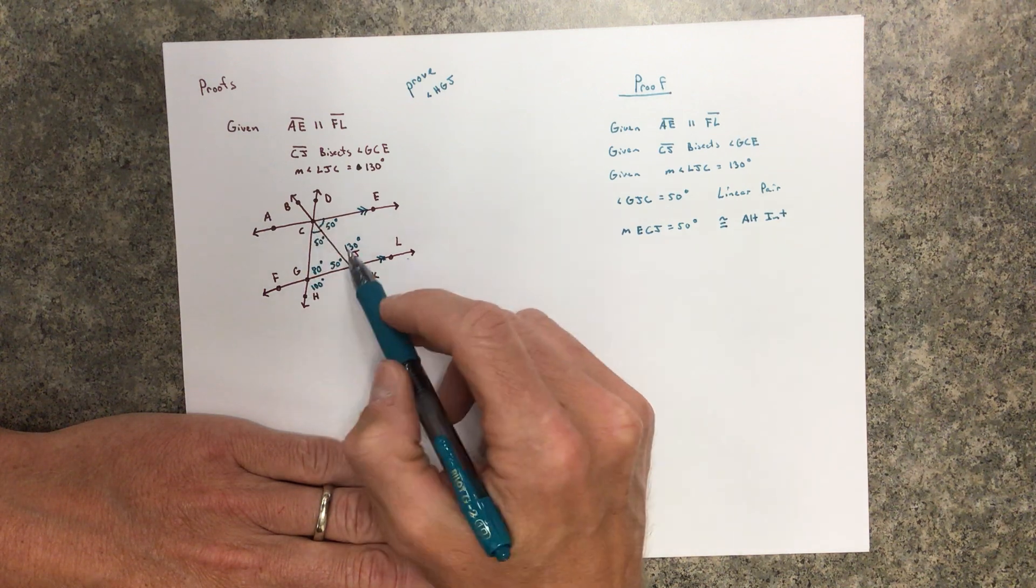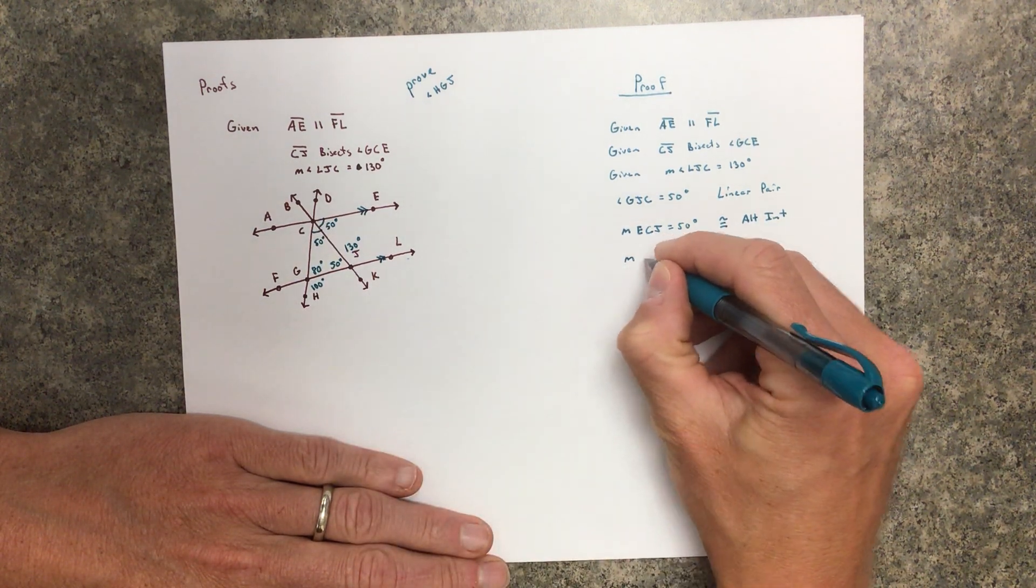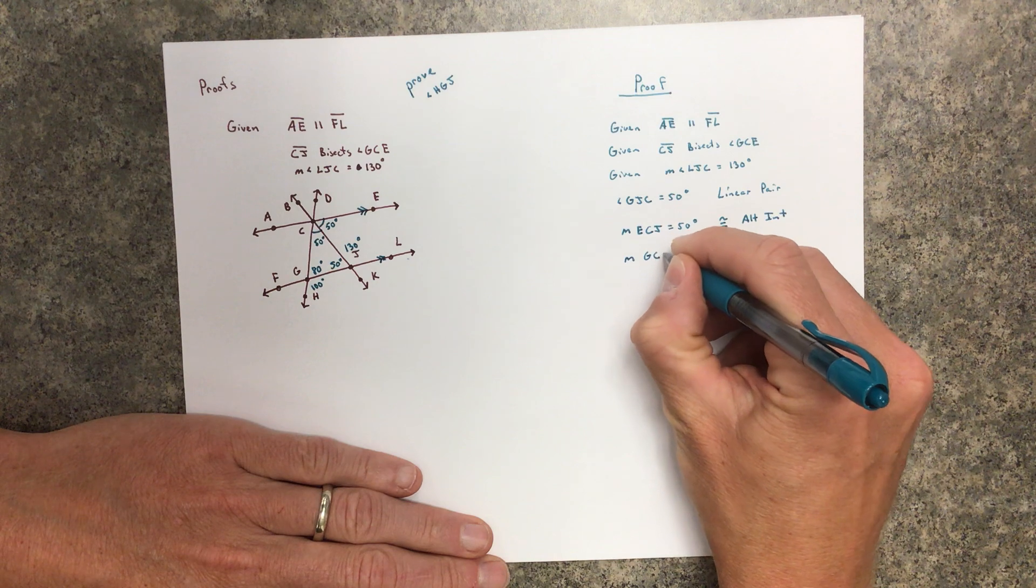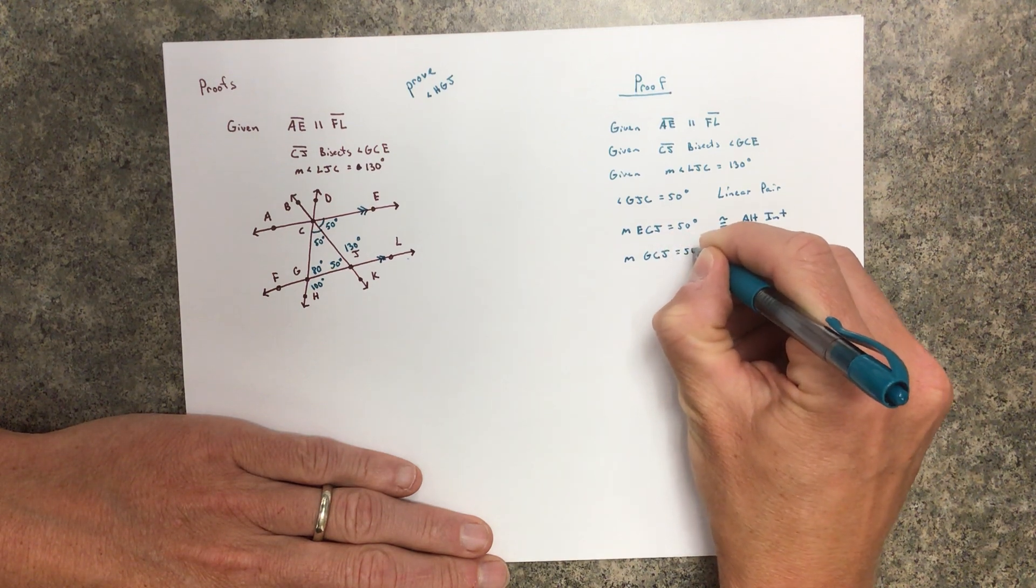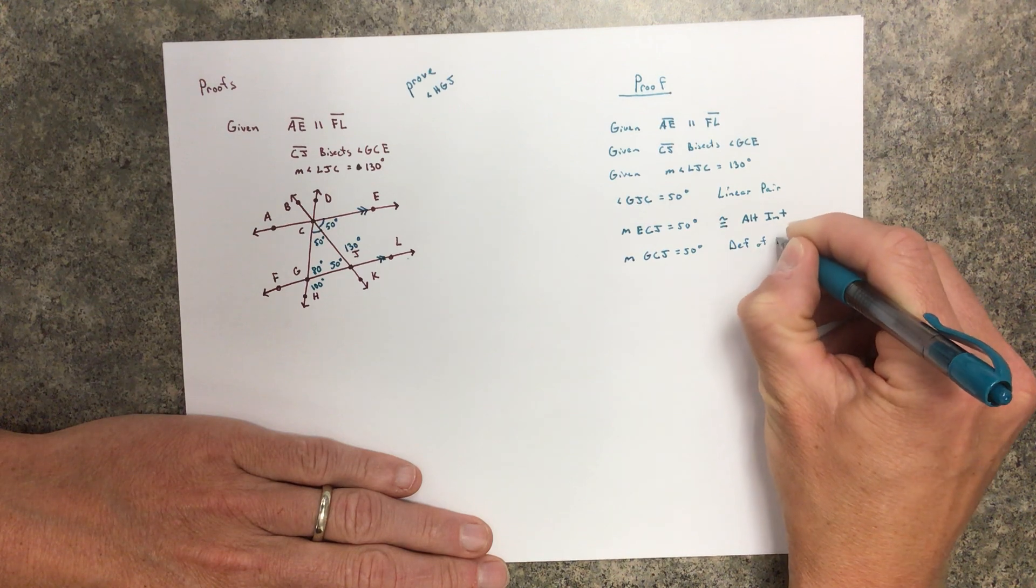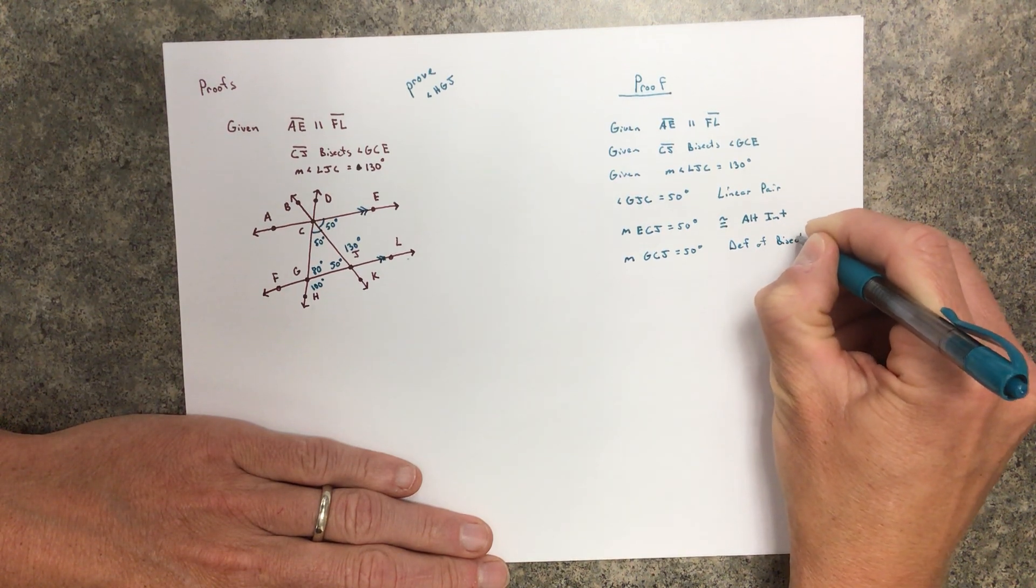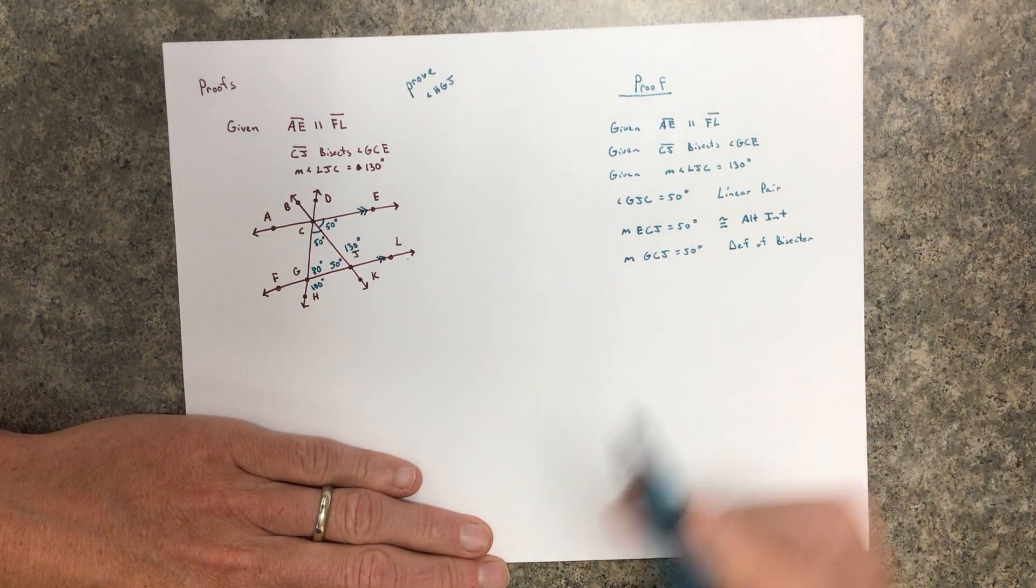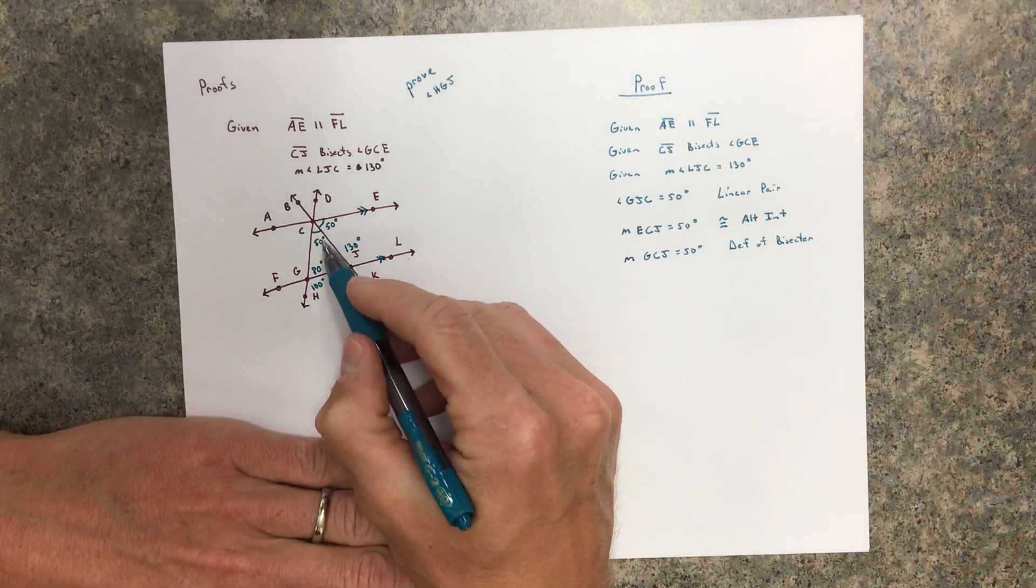Then I know angle GCJ is also 50 degrees. Why? The definition of a bisector, and it was given it was a bisector. Those two are the same.